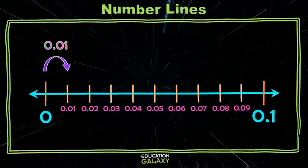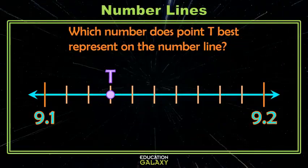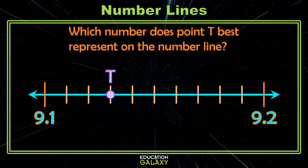Let's look at an example. So here we have the space between 9 and 1 tenths and 9 and 2 tenths, and it's split into 10 equal parts. We want to know, where is T? Maybe this would be a little easier to look at if I remind you that 9 and 1 tenths is the same as 9 and 10 hundredths, and that 9 and 2 tenths is the same as 9 and 20 hundredths.